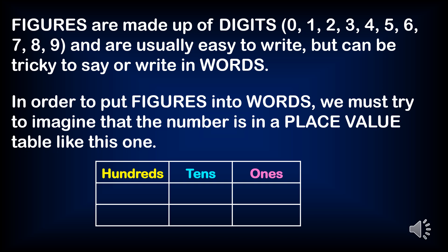Figures are made up of digits: 0, 1, 2, 3, 4, 5, 6, 7, 8, 9. And are usually easy to write but can be tricky to say or write in words. In order to put figures into words, we must try to imagine that the number is in a place value table like this one.